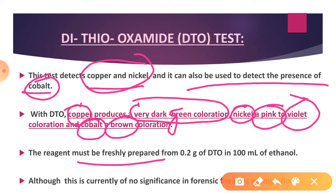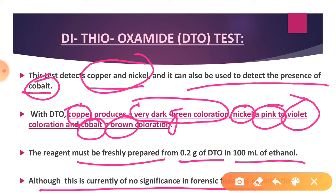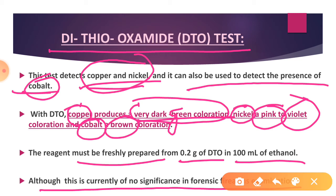The reagent must be freshly prepared: dissolve 0.2 grams of DTO in 100 ml of ethanol. Jo bhi suspected area hota hai, wahanpa isko spray karna hota hai. Although this test currently has no major significance in forensic examination, it shows many different colors for different elements. Its importance in forensic science is limited due to certain drawbacks, but you should know its name, which metals it can detect, and which colors it produces for each metal — as this can be asked in your NET exam.